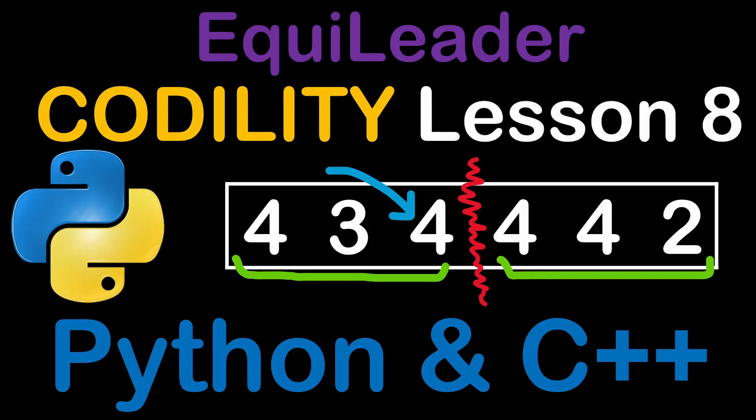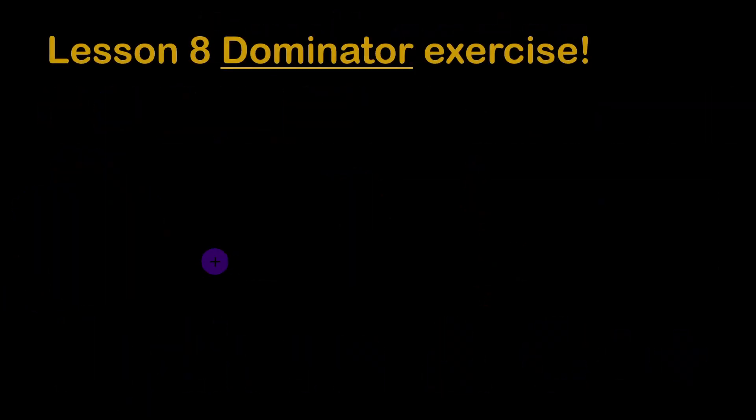Hello again and welcome to the second example of Codility lesson number eight: the Equileader. Before we start describing our problem, it's good to know that this one is a continuation of the previous example entitled Dominator. If you haven't already watched or solved the previous example of lesson eight, I would strongly advise you to do so.